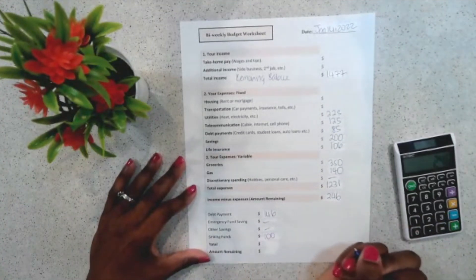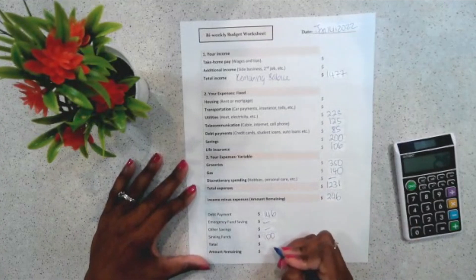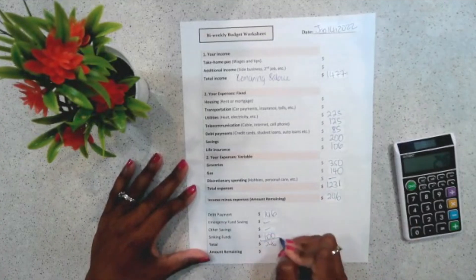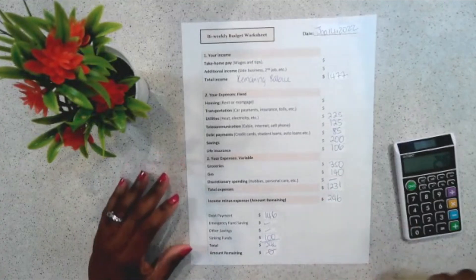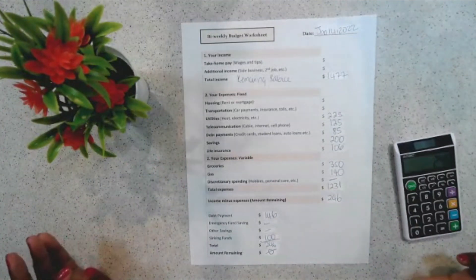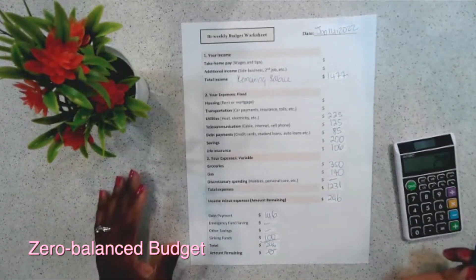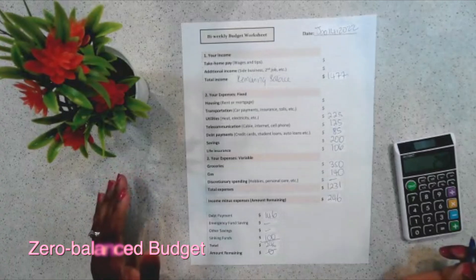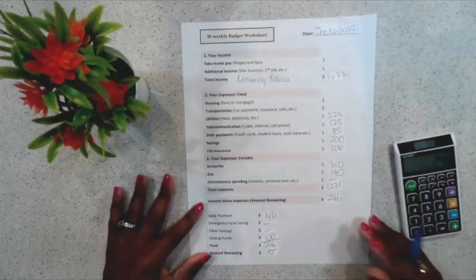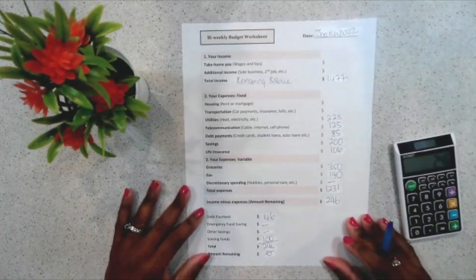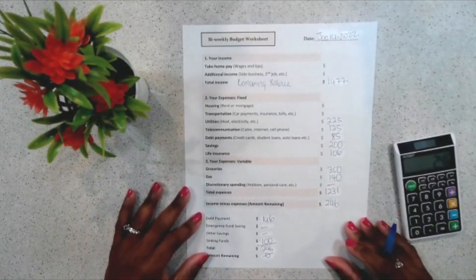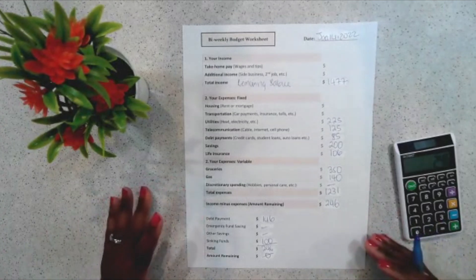So, the remaining amount is now zero. So, this is what you would call a zero balance budget. And this is where we account for every dollar of our income. So, this is pretty much how I do my budget. I am able to see and track how every dollar is accounted for.